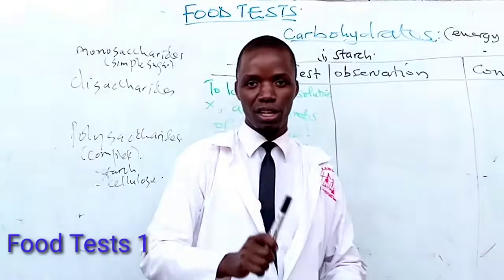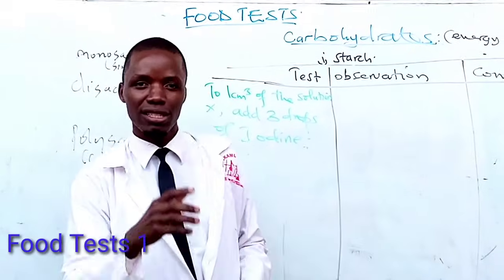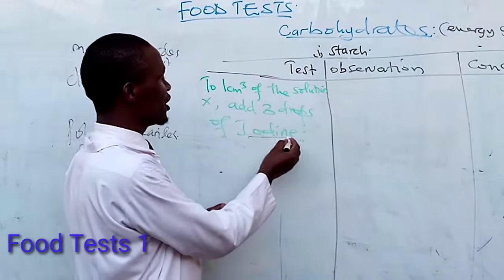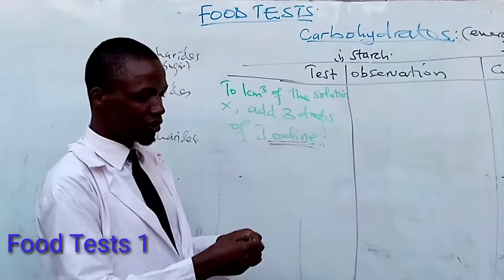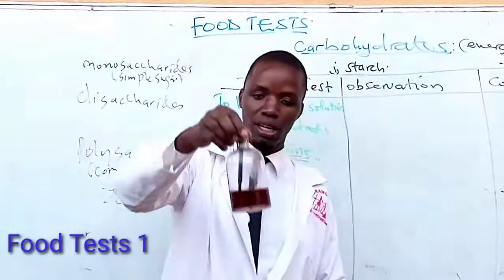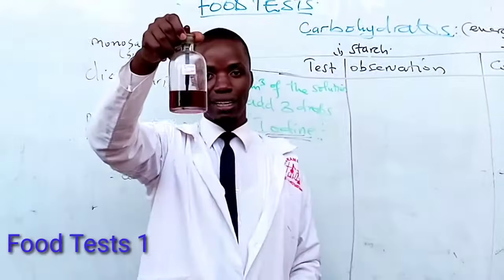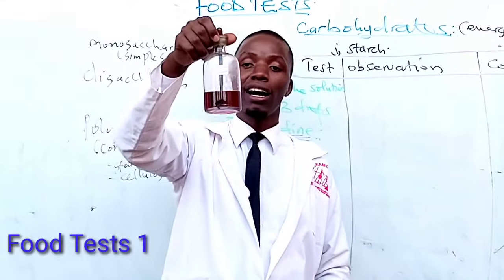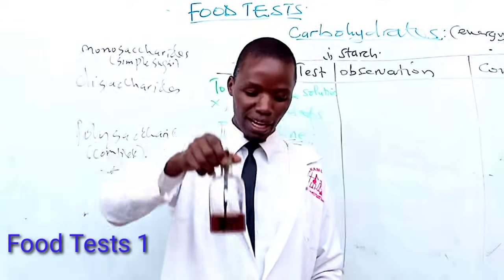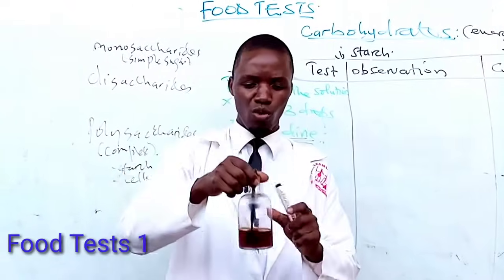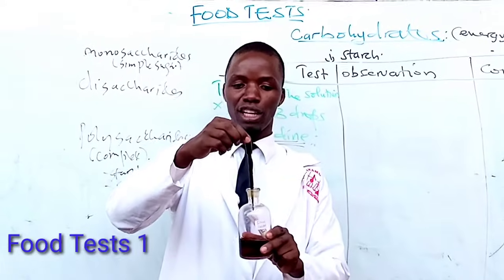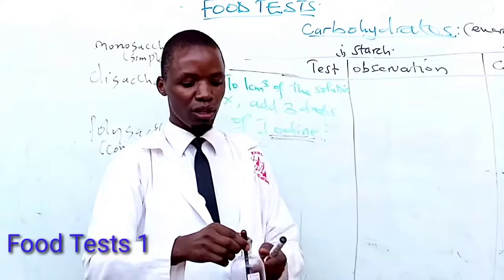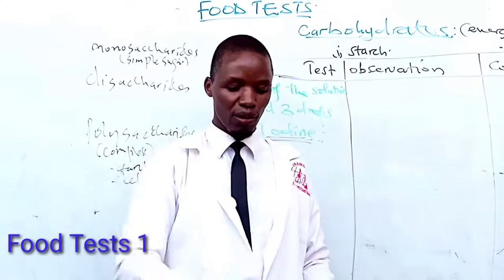In the laboratory, the reagent we use for testing starch is iodine. As you can see on my table, iodine is brown in color. This is the reagent we use for testing for starch. We use drops — that's why you can see the dropper on my bottle. We use the dropper to pick drops from the iodine solution to use in our test.